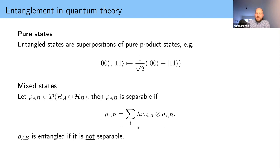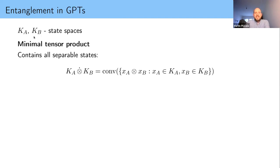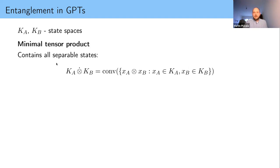The first thing to generalize is separability, since we can easily write down tensor products in vector spaces. In GPTs we construct the minimal tensor product, which is the convex hull of all product vectors — Alice has state space K_A, Bob has K_B, and they can prepare any state using classical communication, giving the LOCC-preparable set. There is a dual construction starting from measurements: the maximal tensor product.